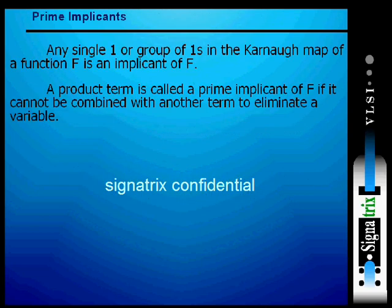Any single one or a group of ones in the Karnaugh map of a function f is an implicant of f. When we have a Karnaugh map defined, we take either a single one or a group of ones and call these high values the implicants.